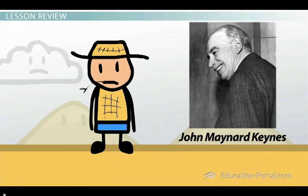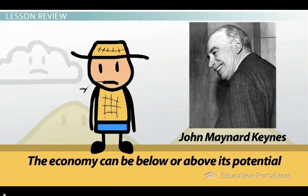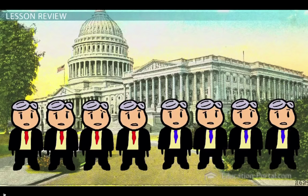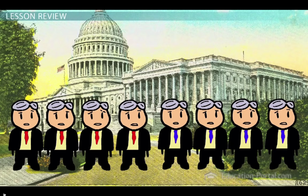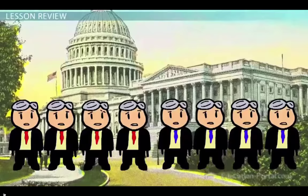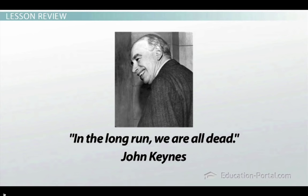The Keynesian model came about when economist John Maynard Keynes observed that the economy is not always at full employment — in other words, the economy can be below or above its potential. Keynes believed that governments and monetary leaders should do something to help the economy in the short run, or the long run may never come. In fact, he's quoted as saying: 'In the long run, we're all dead.'